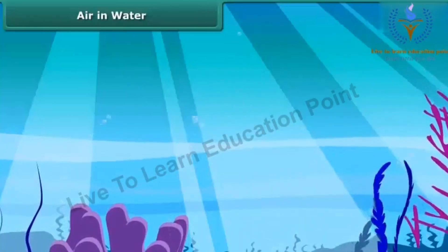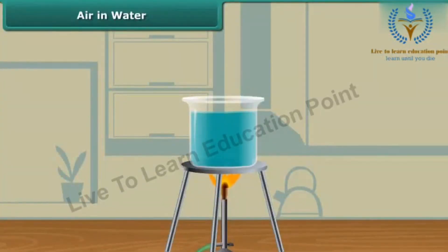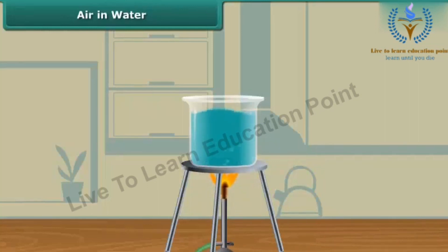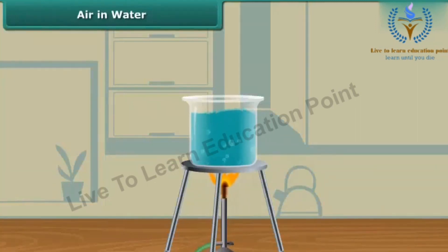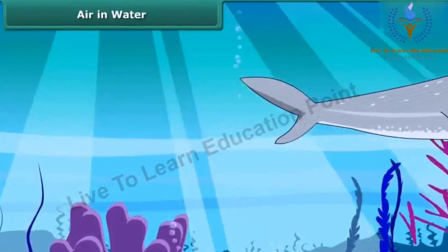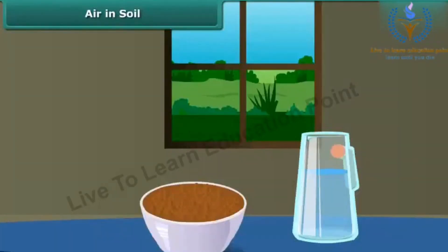Let's do an activity. Take some water in a beaker and heat it to boil. Can you see the bubbles coming out? These bubbles are coming from the water itself. Air remains dissolved in water at normal temperature so we can't see it. When water is heated, the dissolved air comes out as bubbles. The animals and plants in water use this dissolved oxygen for respiration.